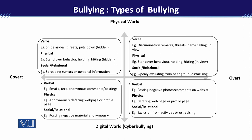Similarly, if someone wants to defame you in social relationships, they will openly tell group members things like 'we don't have to play with this child' or 'don't socialize with this child' — and this is observable. In the digital world, if someone is bullying at the verbal level overtly, they will post negative photos, comments, or website content with their name — not anonymously. Defaming a web page or profile will also be done with their own name. Similarly, if someone wants to exclude another from activities, that will also be done with a name — nothing will be hidden or anonymous.